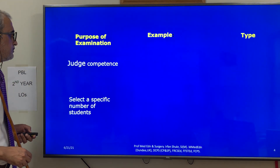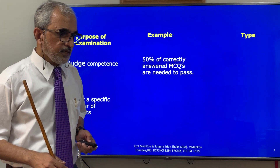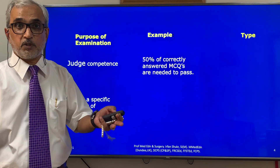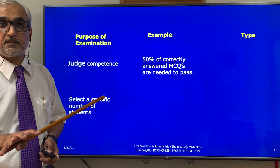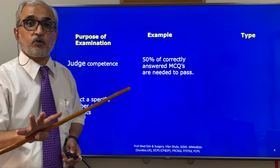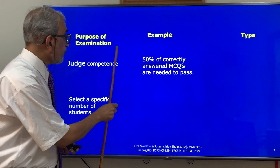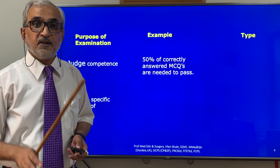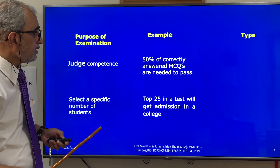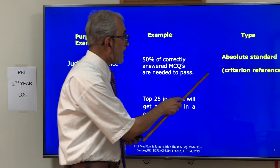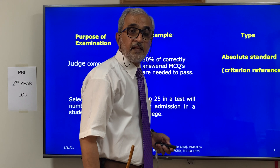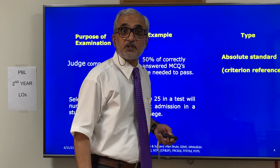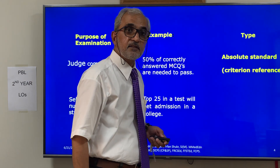To judge competence, for example, we may say: if a student must know the content, a student will be competent if he answers at least 50% of MCQs correctly. In this case, we are checking his competence against a criterion — and the criterion is 50% of the content. If he knows that, he is going to become a safe doctor. This is an absolute standard.